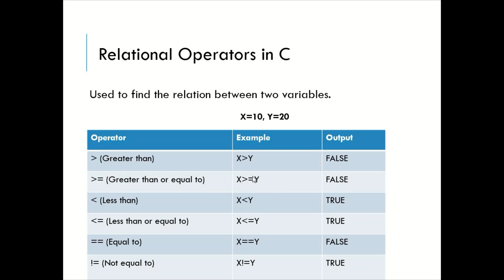Greater than or equal to checks whether x is greater or equal to y. If the value of x is 20, in this case it is going to return true because x is not greater but it is equal to y. So greater than or equal to will generate true when x is either greater or equal to y. In the similar way, we have less than and less than or equal to. If x is less than y, it returns true. In this case, 10 is less than 20, so it returns true. Less than or equal to will return true when x is either less or equal to y.